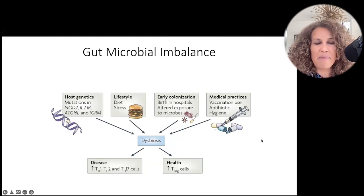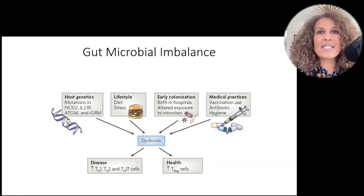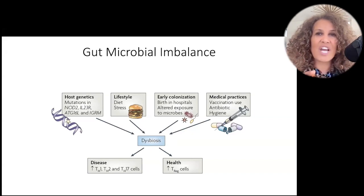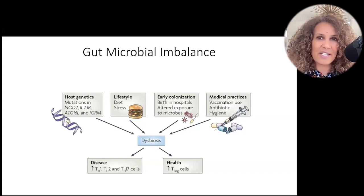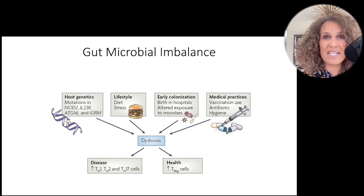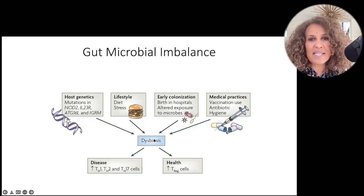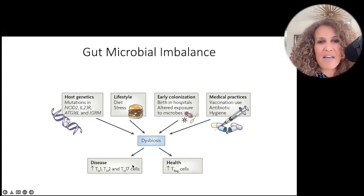When we think about gut microbial imbalance and how that leads to disease, we have host genetics. A lot of these diseases do have a genetic predisposition, but that predisposition is just a suggestion — it doesn't mean disease is actually going to develop. We have mutations that can increase the risk, but we also have lifestyle, diet, stress, early colonization — were you born via C-section or vaginally delivered? Altered exposure to microbes, and of course medical practices like antibiotics. These things can all lead to dysbiosis, guiding us toward disease or health depending on our exposures.